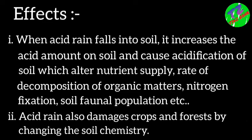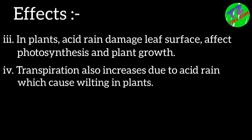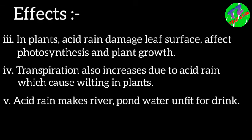Acid rain also damages crops and forests by changing the soil chemistry, as the soil becomes more acidic in nature. In plants, acid rain damages leaf surfaces and affects photosynthesis and plant growth. Transpiration in plants also increases due to acid rain, which causes wilting.